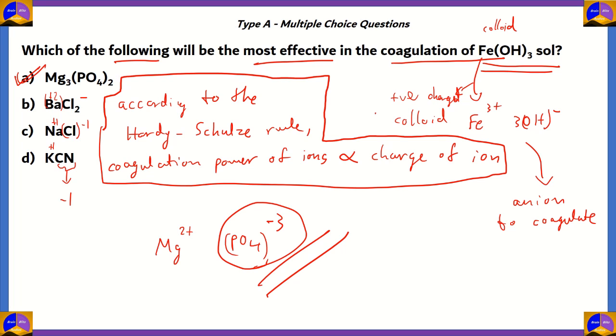The most effective of the following in the coagulation of ferric hydroxide would be magnesium phosphate. So, the other options only have minus one as their anion charge, which basically does not equal the charge of Fe3+. So, therefore, the most effective one would be the one with the highest charge of the anion. So, therefore, that leaves magnesium phosphate as the right candidate.